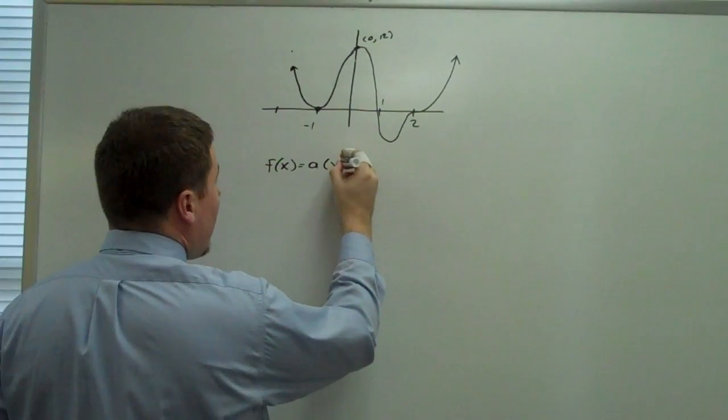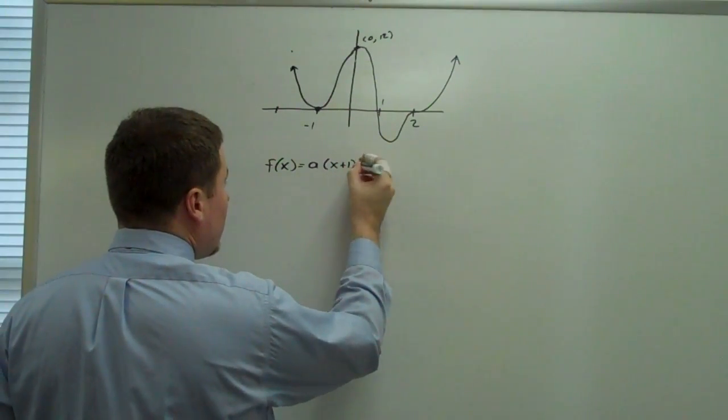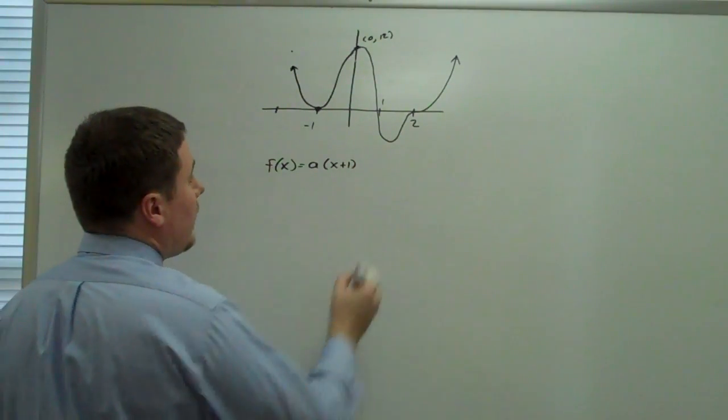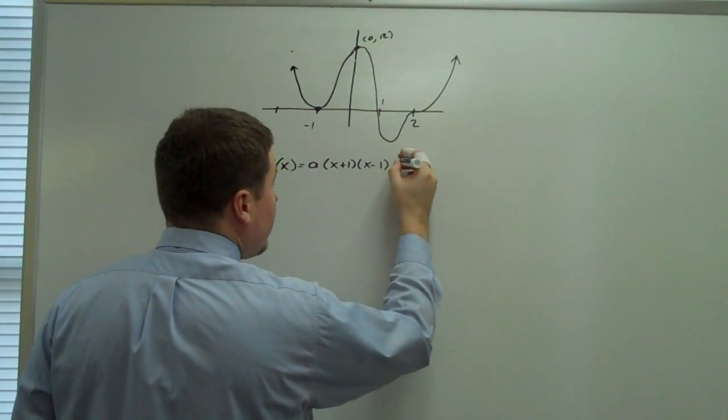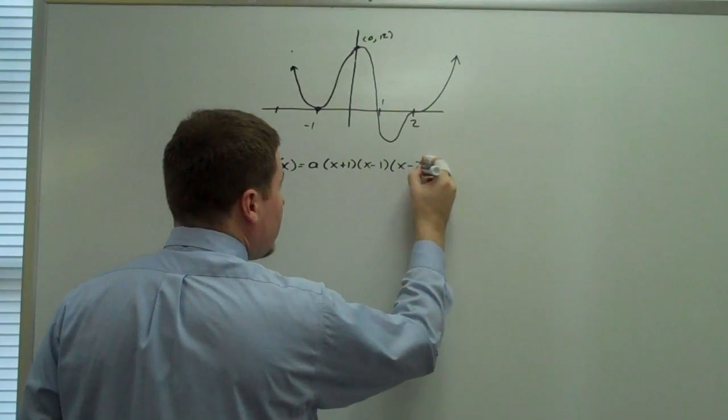So x minus 1 is going to be x plus 1, or sorry, x equals negative 1. It's going to go through 1, so that would be x minus 1. And it's going to go through 2, that would be x minus 2.